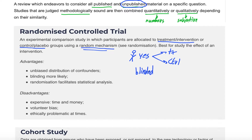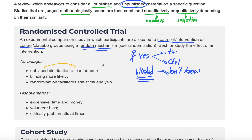In an RCT, patients agree to be in the study and are then randomly assigned to either the control group or the treatment group — they don't have a say in which group they're in. If the trial is blinded, then both the researchers and the patients don't know which arm of the study they're in. This is important because it helps remove biases. For example, if a doctor knows a patient is in the control arm, they might keep a closer eye on that patient, which could change the study outcomes.